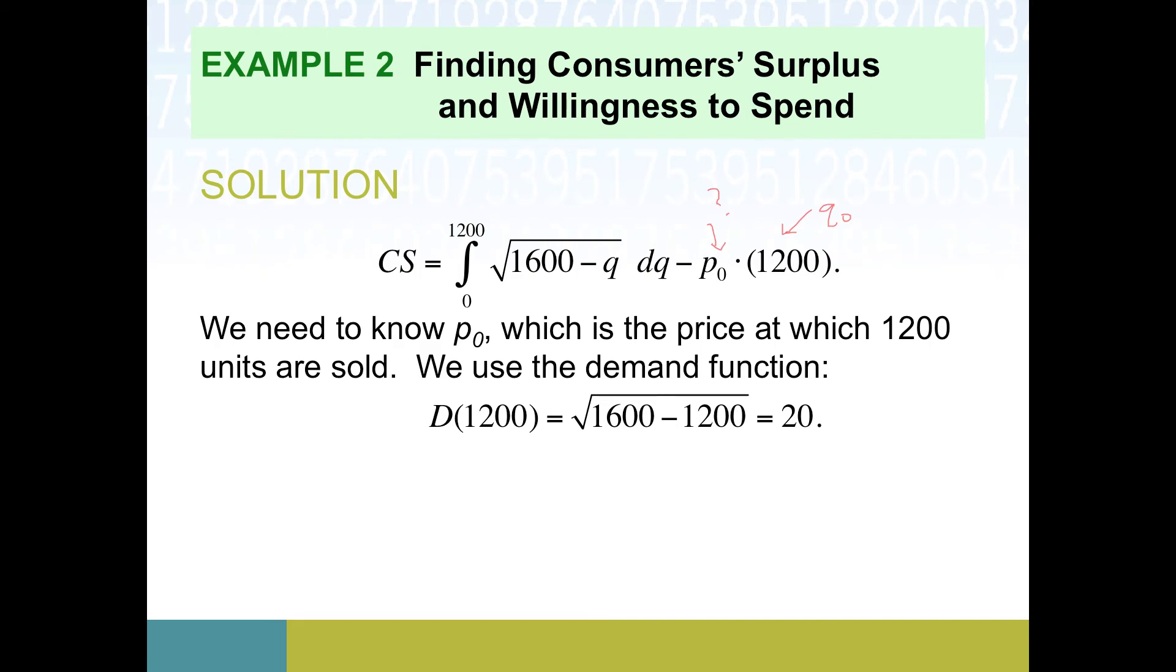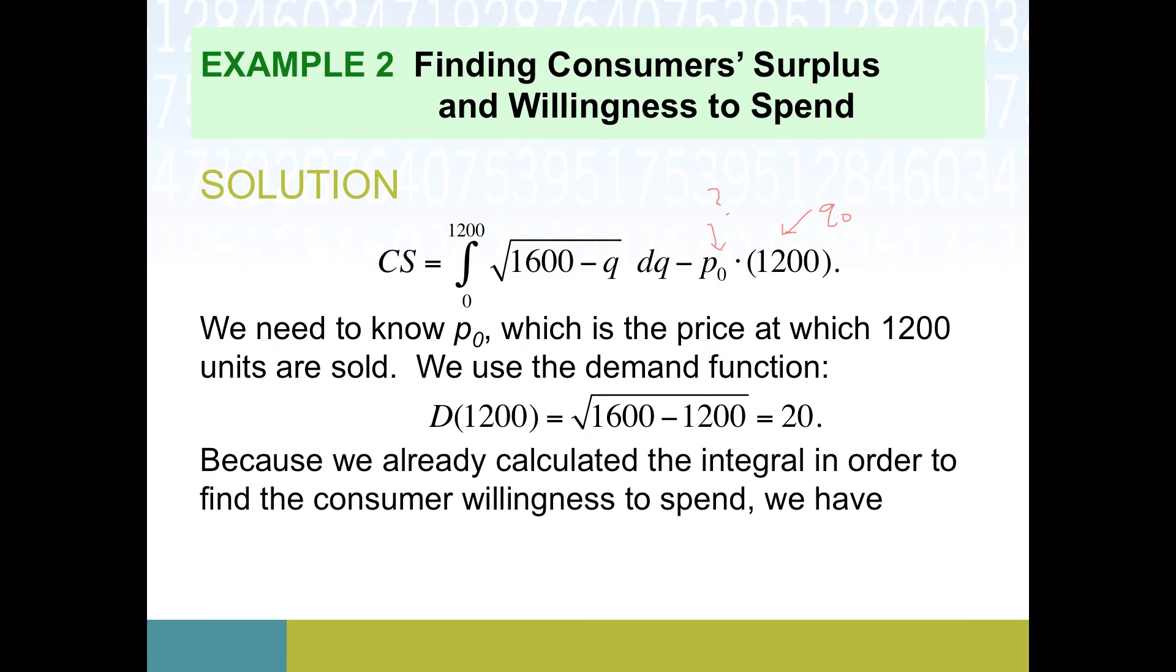Since it's equilibrium, we could go to either the demand or the supply side of this to get an answer. We're going to look at demand just because, you know, why not. And if we plug in twelve hundred to our demand formula, we get twenty. So what that means is we just figured out here is P naught.